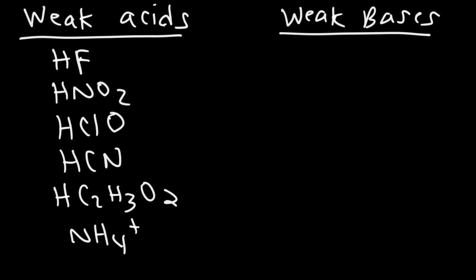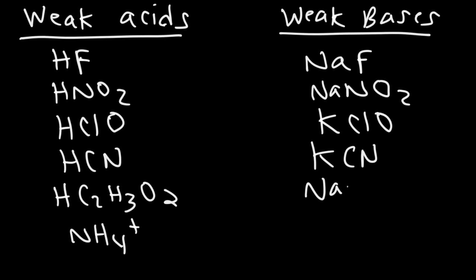Now, the conjugate of a weak acid will be a weak base. Sodium fluoride is a weak base. Sodium nitrite is also a weak base. Potassium hypochlorite, weak base. KCN, that's weak base. Sodium acetate, and even ammonia. These are all weak bases.